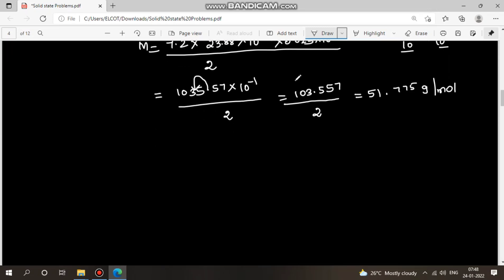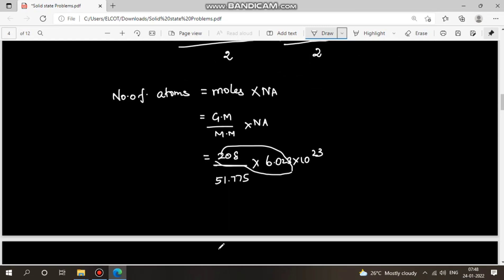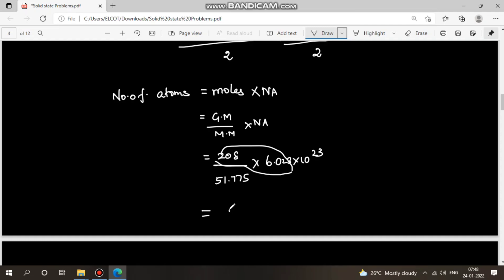Now to find the number of atoms in 208 grams. The formula is: number of atoms = (given mass / molecular mass) × Avogadro's number. Given mass is 208 grams, molecular mass is 51.775 g/mol, Avogadro's number is 6.023 × 10²³. Solving this gives 2.4196 × 10²⁴ atoms.